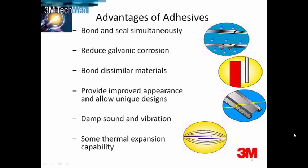Bonding dissimilar materials is becoming increasingly important to reduce weight and improve added value in new designs. It enables new designs to be brought to production that were previously not possible. You can also allow for expansion and contraction in the design, which is especially useful for bonding dissimilar materials or for longer parts.